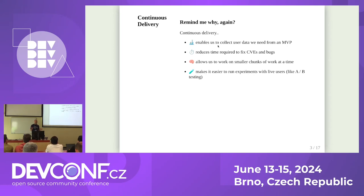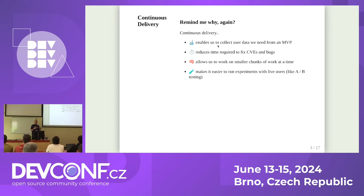So why were we doing continuous delivery? Agile tells us we're building software to satisfy user needs. The fastest path to that is to get working software in users' hands as fast as we can so we get feedback. That feedback gives us the data to form our MVP and iterate. Continuous delivery also reduces the time it takes to patch CVEs and bugs — when there's a bug or a patch, we can deliver again, no problem.